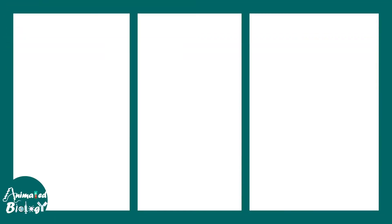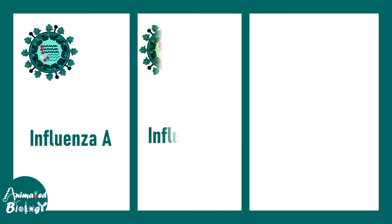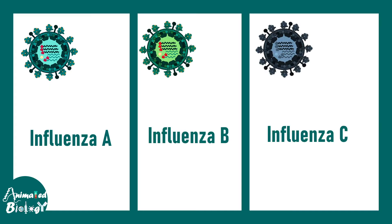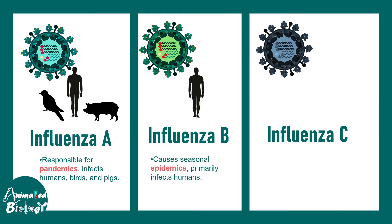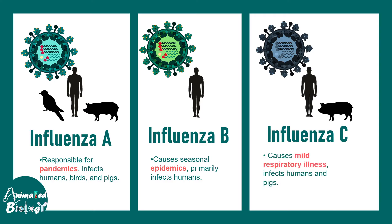There are different subtypes of influenza virus: influenza A, influenza B, and influenza C are the most major ones. There is also an influenza D type which is not very important. Influenza A is the biggest culprit because it is responsible for pandemics and can infect humans, birds, and pigs. Influenza B causes seasonal epidemics and is less dangerous than influenza A but more dangerous than influenza C. Influenza C mostly causes mild infections and does not cause pandemic or epidemic situations; it can affect humans and pigs.